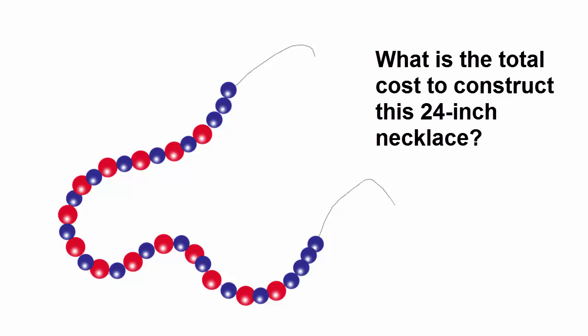Let's start out with a visual example of decomposition. Here is a necklace made of red beads, blue beads, and thread, each with a different cost. The problem? Determine the total cost to construct this 24-inch necklace. Think for a minute — how do you set up this problem?